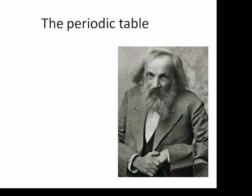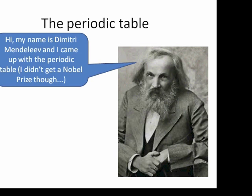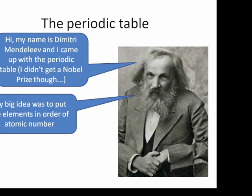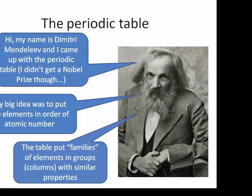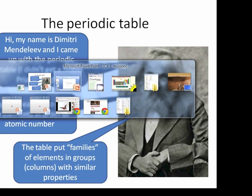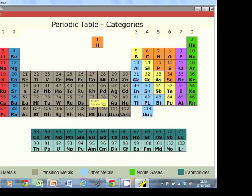Right then, so the periodic table. The periodic table was invented by a chap by the name of Dmitry Mendeleev, and his important realisation was that the elements must be put in order of atomic number. And he put families of elements together, that is, elements with similar properties, into groups or vertical columns on the periodic table. So if I show you a periodic table, here is one, and you can see they're colour-coded to show the various regions of the periodic table.